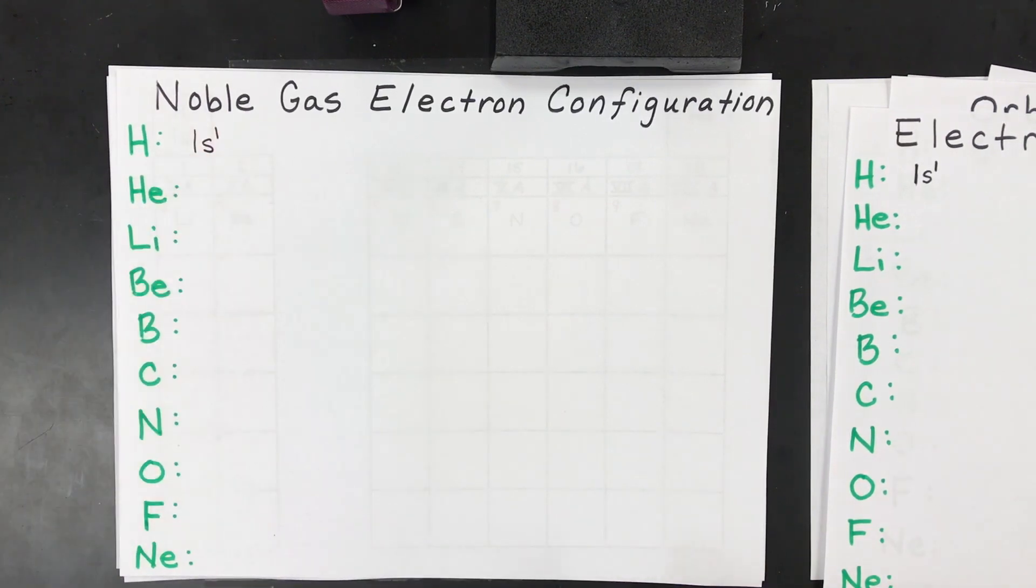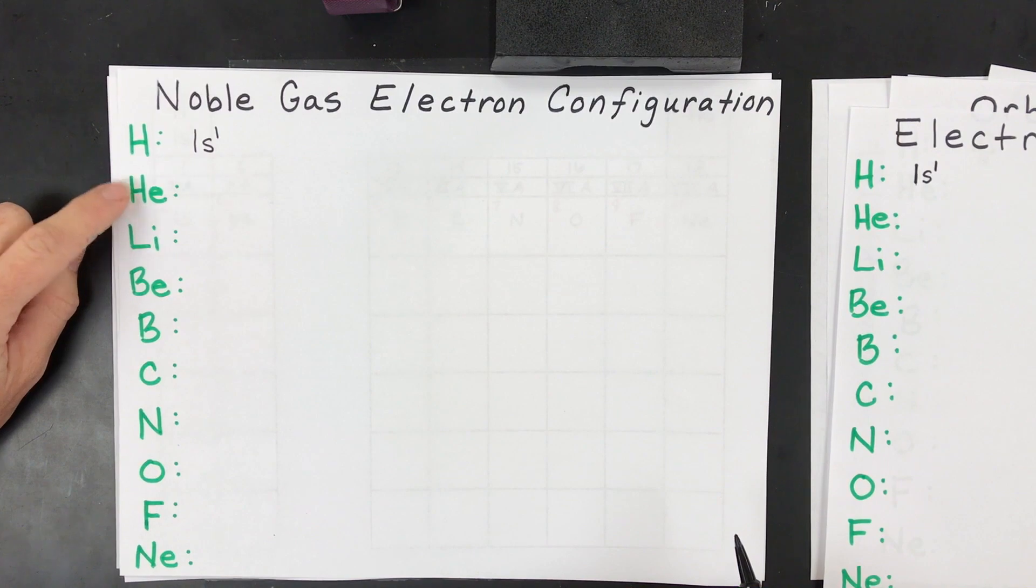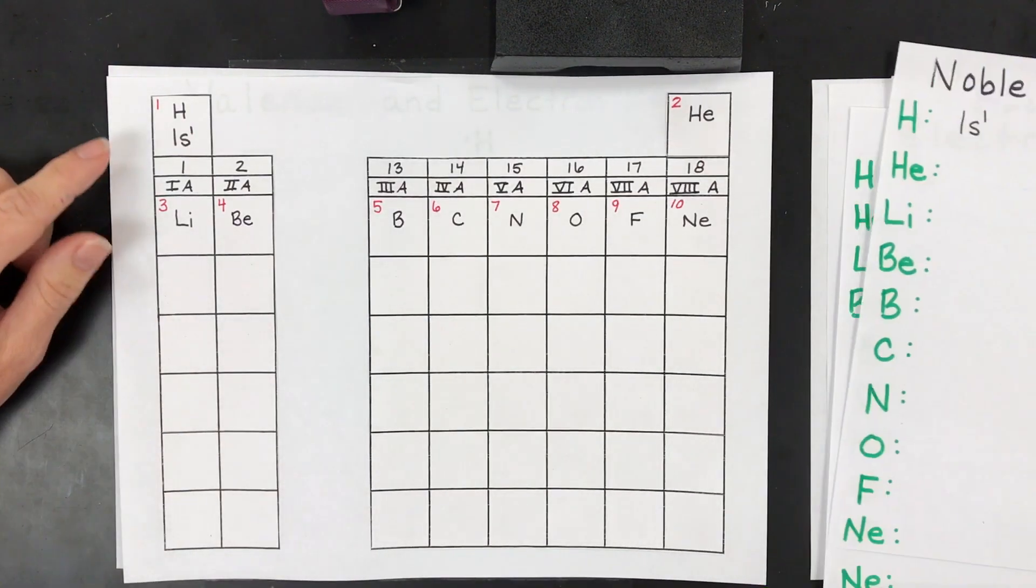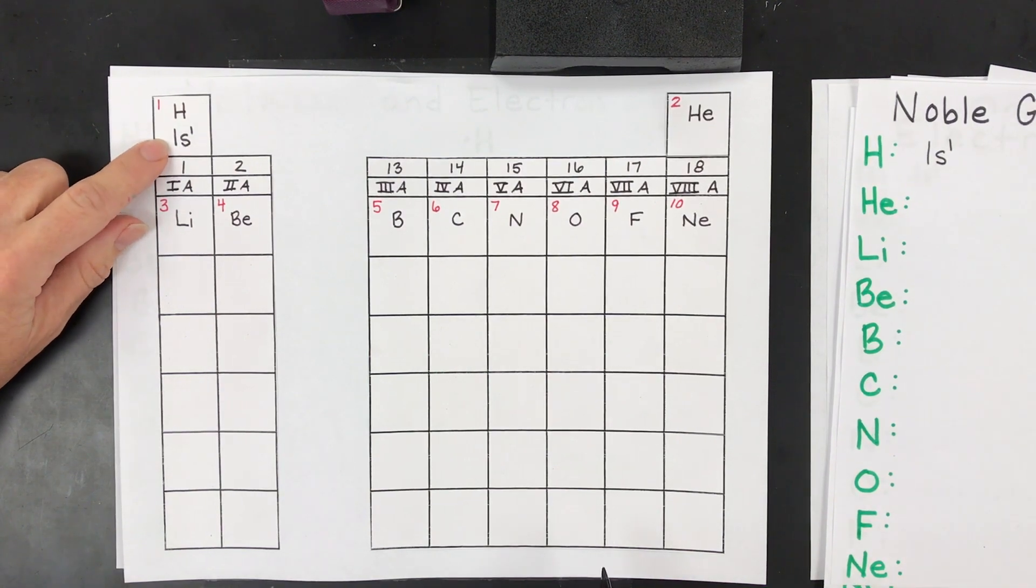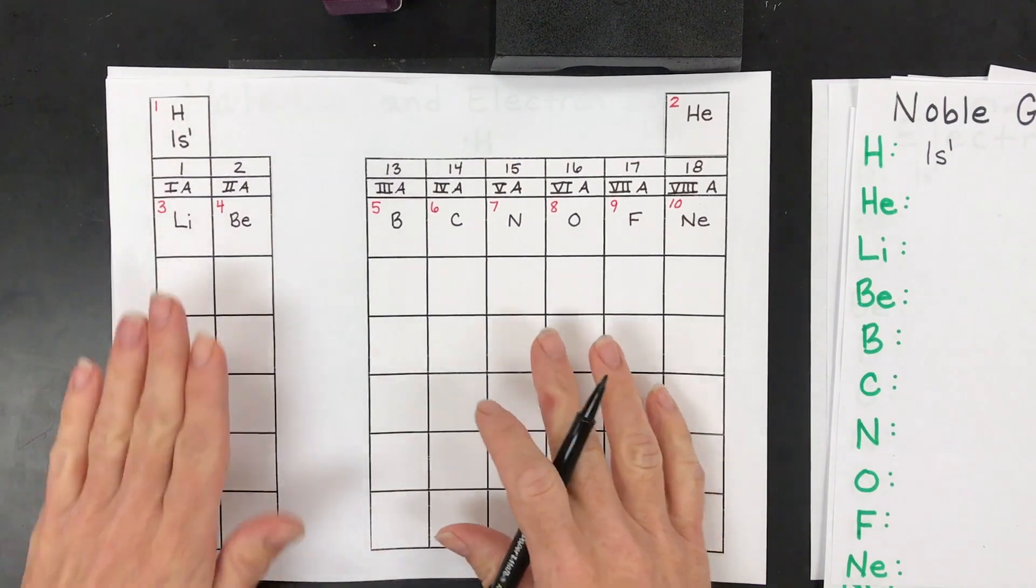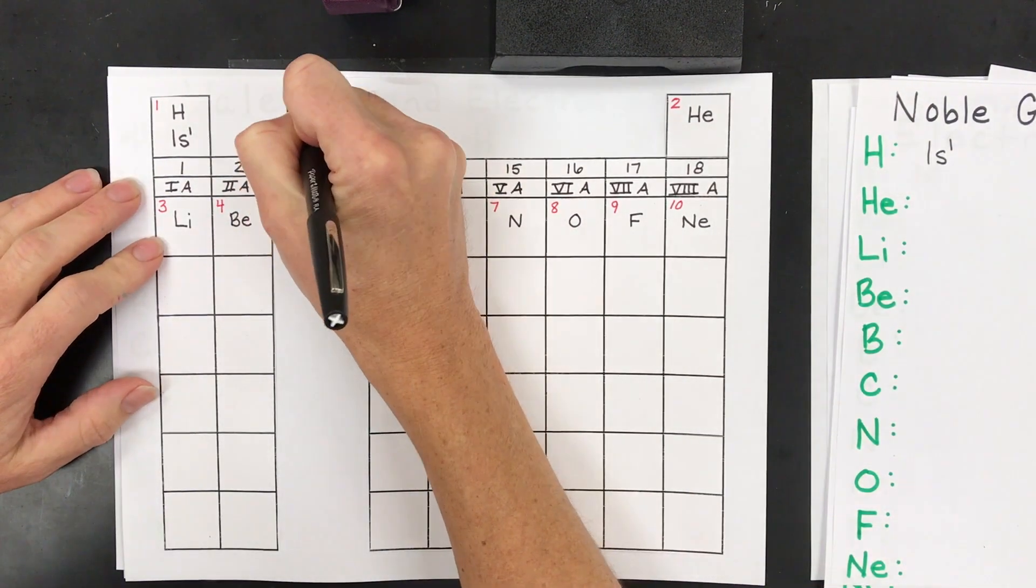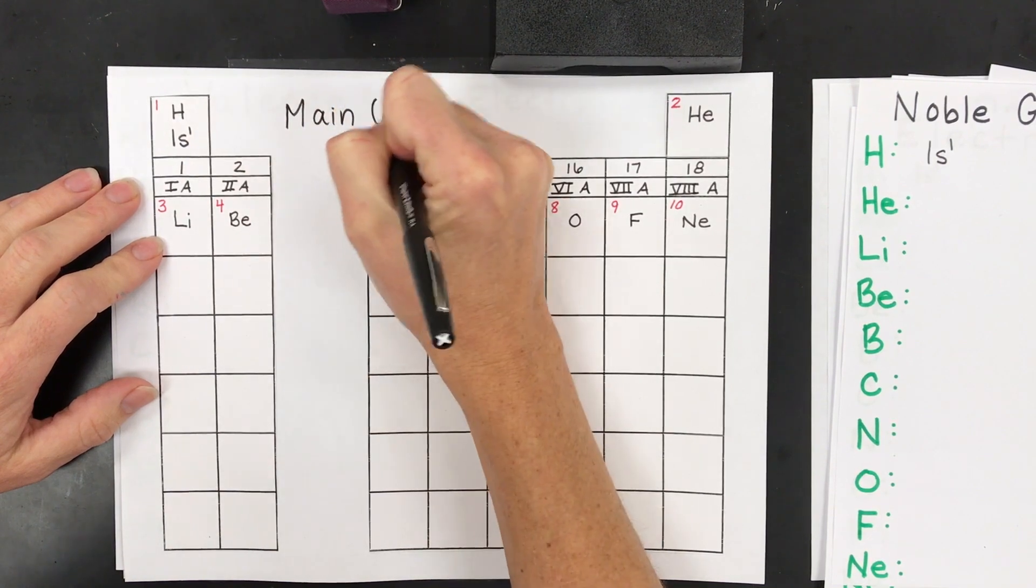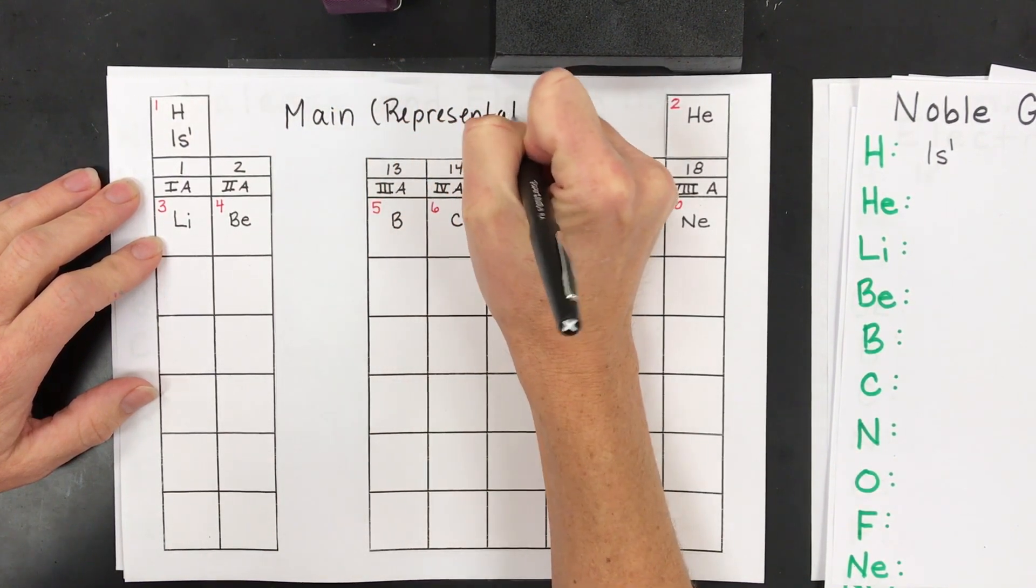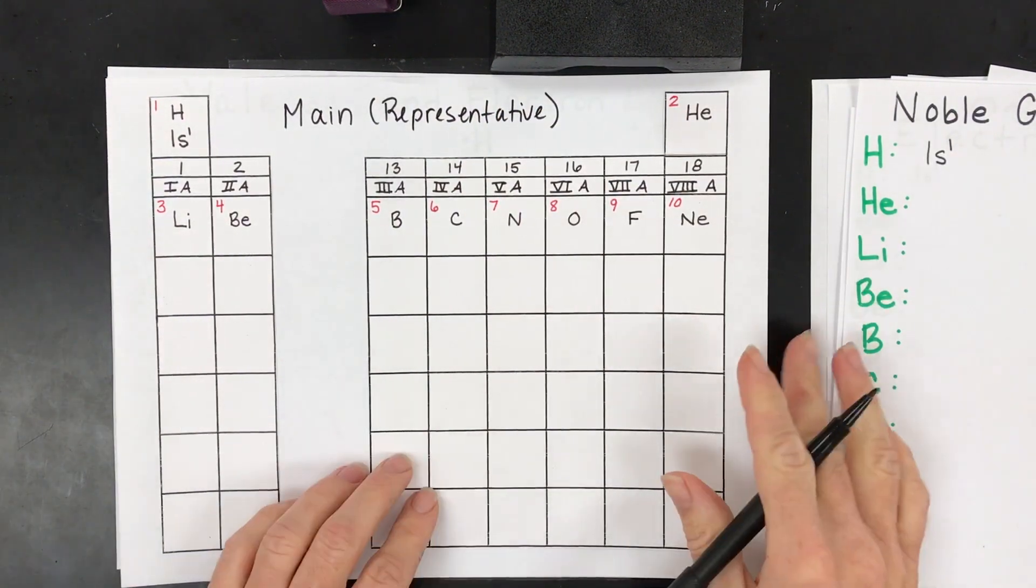And then there isn't really a shorthand version because we haven't passed a noble gas. Once we go through and pass helium, which is a noble gas, you'll be able to use that. And then what I'm going to have you do is put that electron configuration on a periodic table. I just cut out part. I only have the what's called the main group of elements. So the name of this is these are the main or they're the representative elements. And I'm only going to focus again on elements one through 10 today.